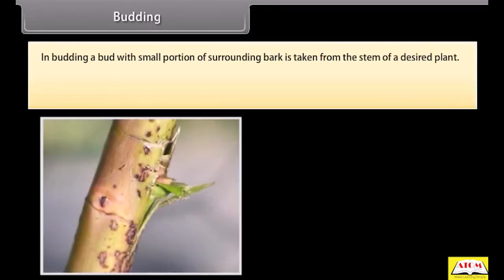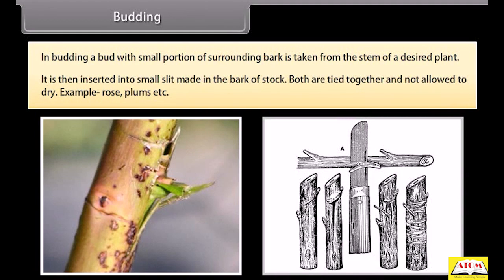In budding, a bud with a small portion of surrounding bark is taken from the stem of a desired plant and inserted into a small slit made in the bark of the stock. Both are tied together and not allowed to dry. Examples include rose and plum.